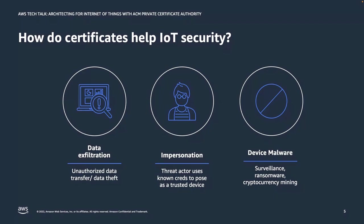Device malware doesn't tie directly to certificates per se, but rather digital signature verification, which is a similar cryptographic technology. A malicious actor could install malware onto a device for surveillance, ransomware, or even hijacking it for cryptocurrency mining. Being able to verify software updates with digital signatures is one way to mitigate that risk. If a device is compromised by malware, you can also revoke its certificate to remove it from your network. This is just skimming the surface on IoT security — let's move on to practical certificate provisioning for IoT devices.